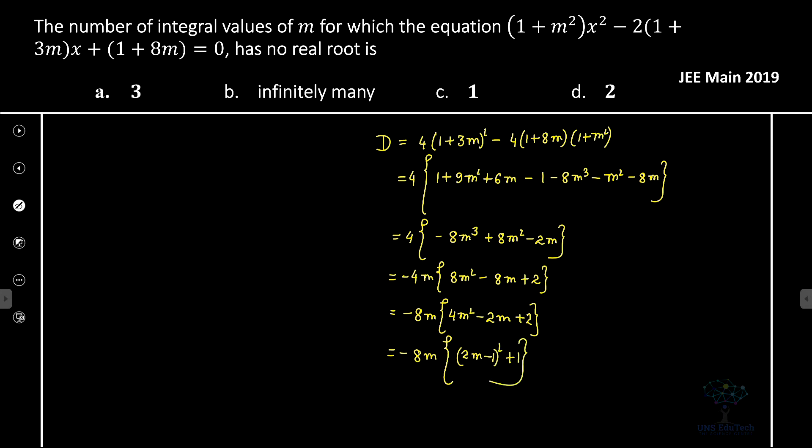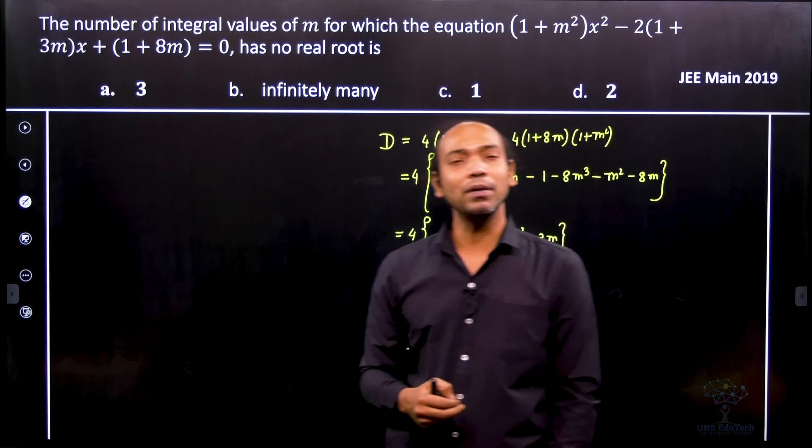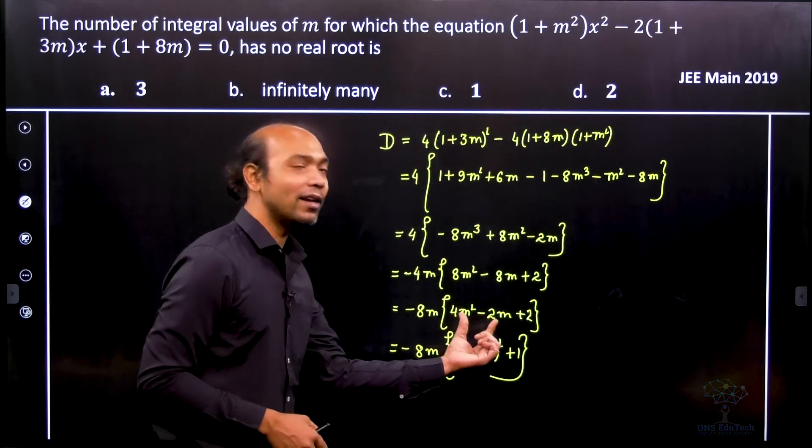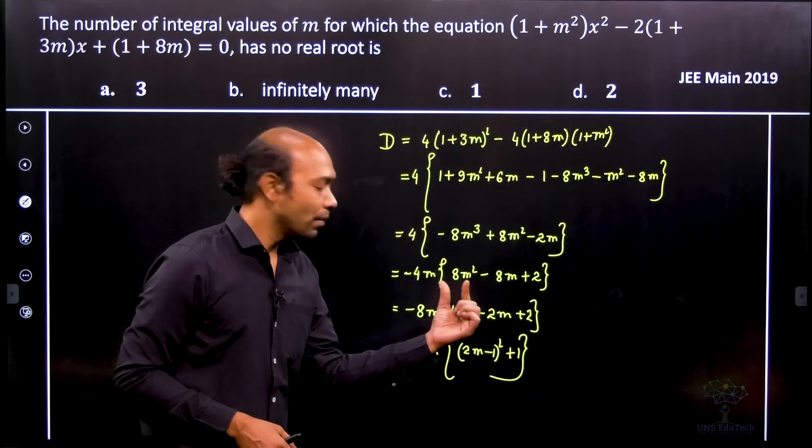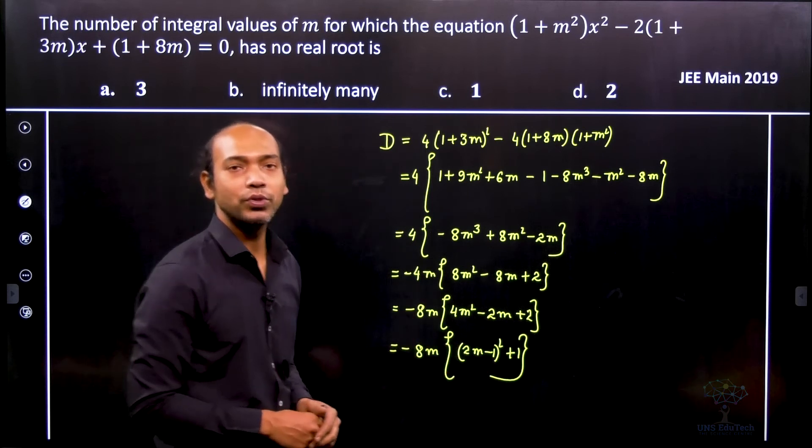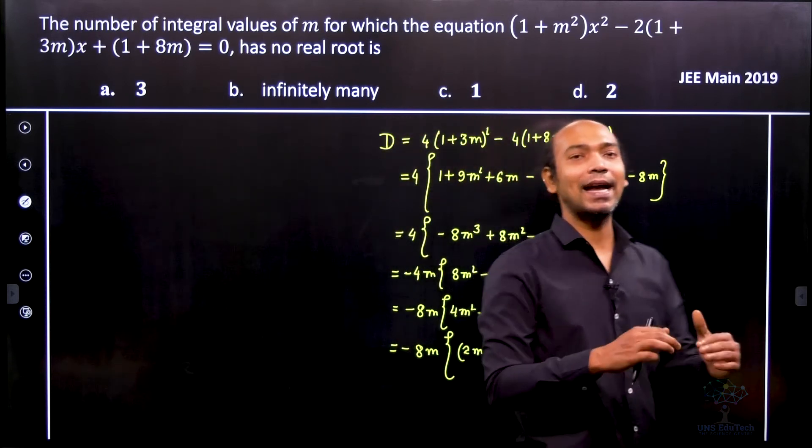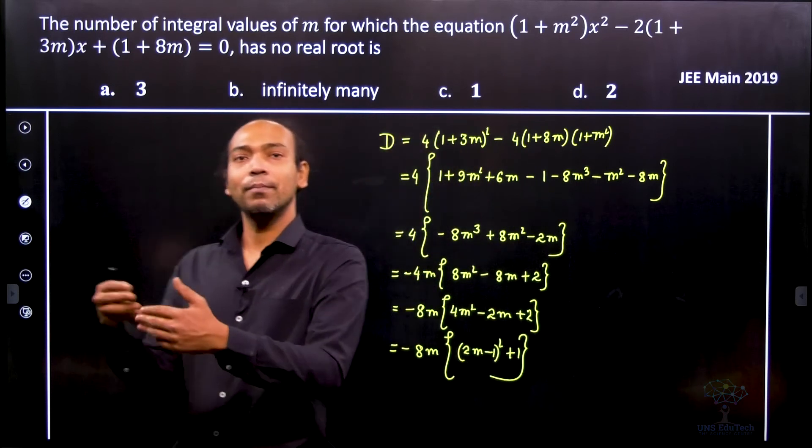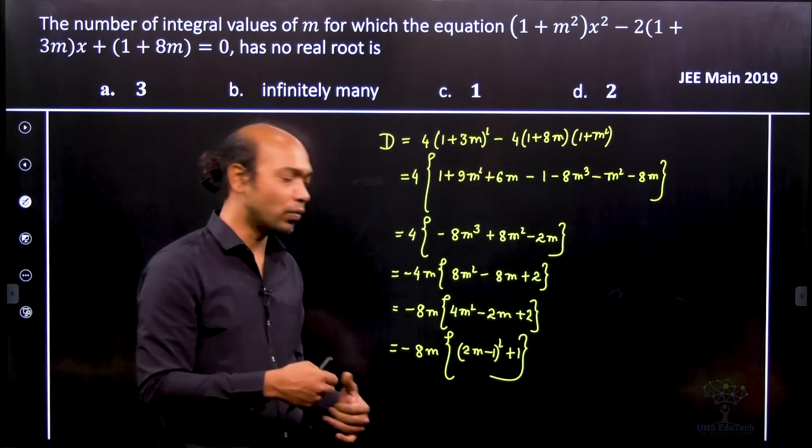Now why we write down in this form? It's simply because if we write down that, we cannot make a conclusion from here. But from this line, (2m - 1)² + 1, you can easily see that is greater than 1, because some square term plus 1. So it is always greater than 1.